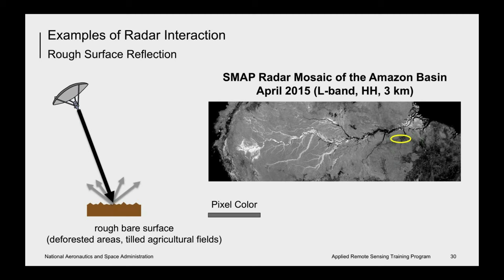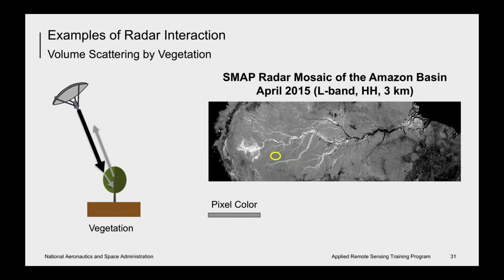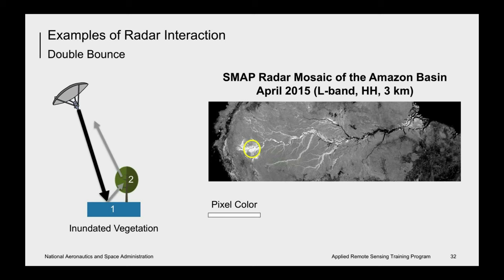The third example shows volume scattering delineated by the yellow circle — a forested area. The intensity of volume scattering depends on physical properties of the volume: variations in dielectric constant and structure. The final example shows double bounce, again delineated by the yellow circle — an inundated forest, meaning trees standing in water. The signal bounces off the water (a specular reflector), onto the tree trunk or other tree components, and then back to the satellite, resulting in a very strong return. We can detect that there is standing water above the surface, but not the amount — whether it's 10 centimeters or a meter is unknown.